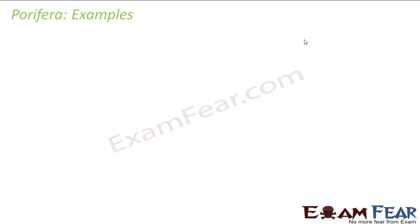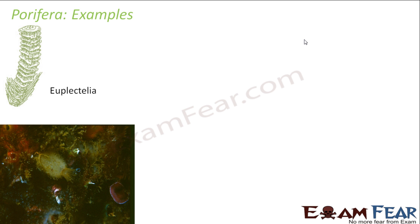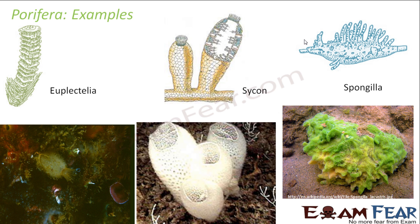Some examples of Porifera are Euplectella, Sycon, and Spongilla. Looking at real-life pictures: Spongilla has small pores all over it; Sycon has a similar cylindrical tube-like structure with pores all over the body; Euplectella has hair-like structures and pores throughout its body. All organisms with pores all over their body are Porifera.